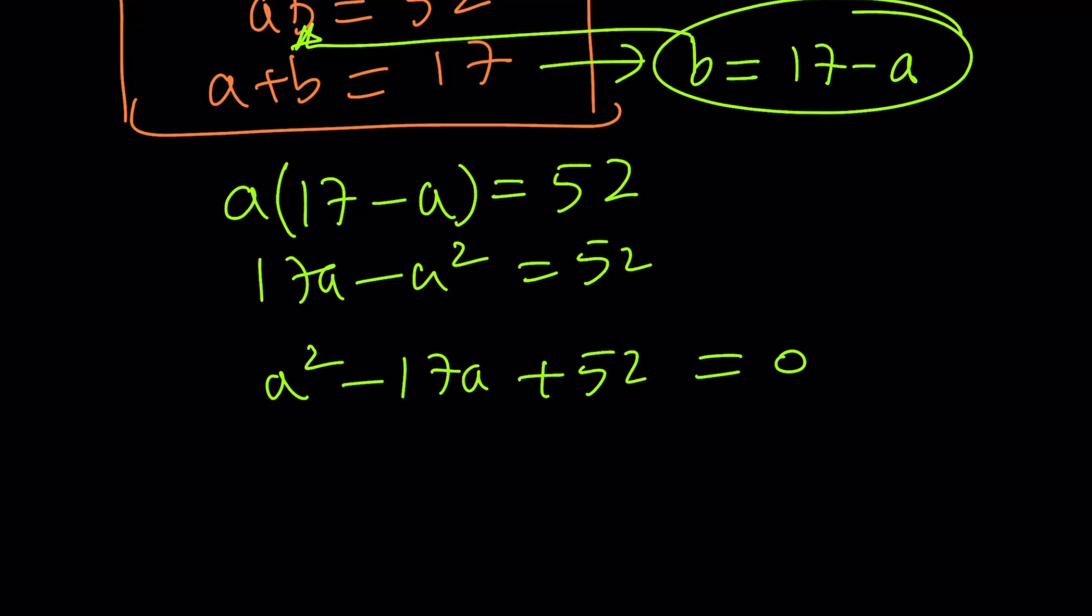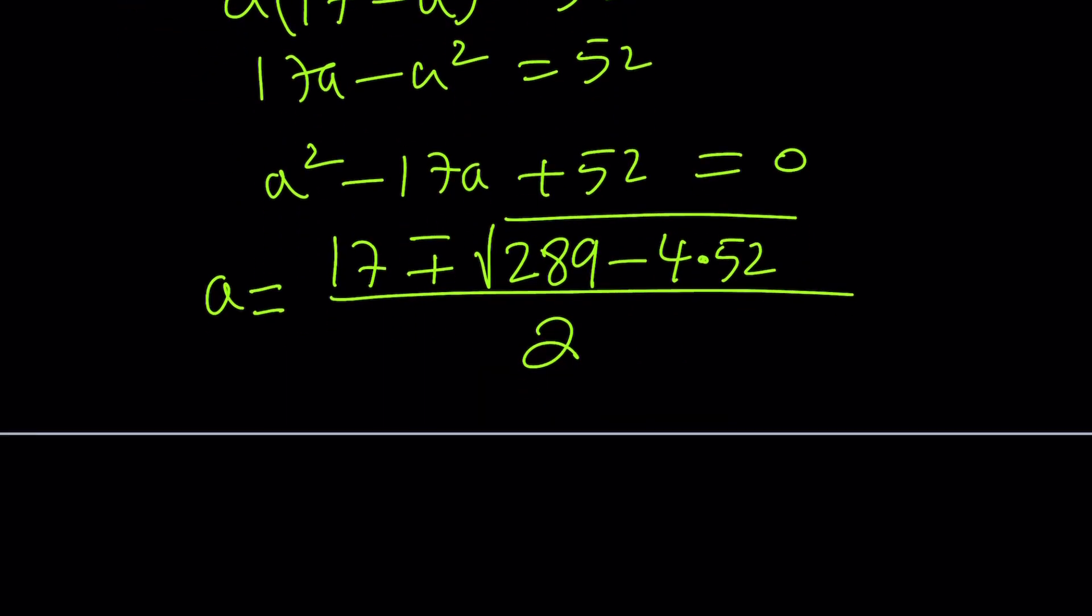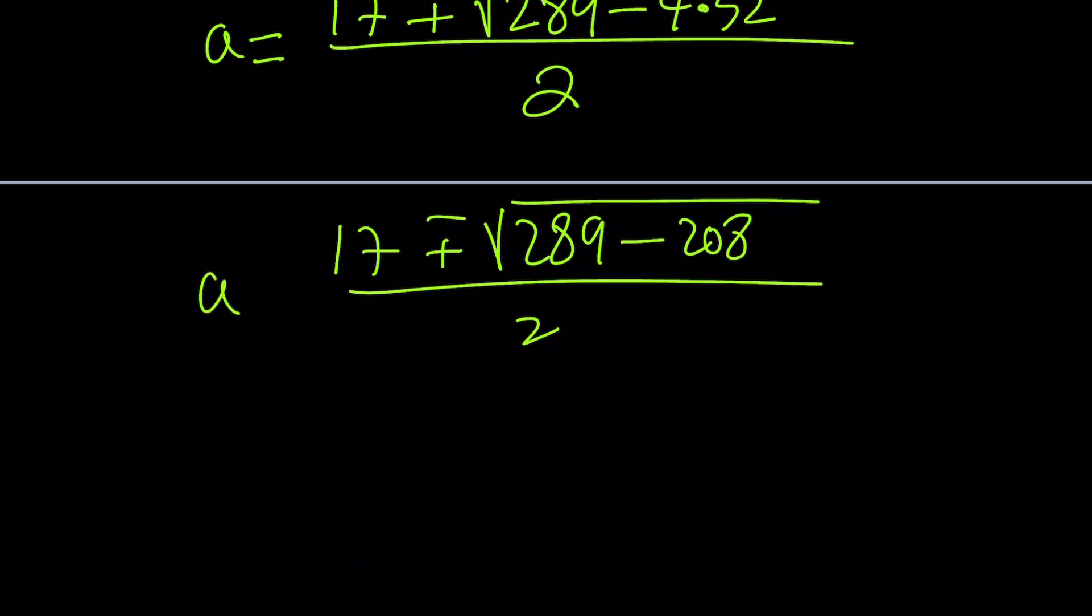You could also use the quadratic formula. So to use the quadratic formula, a equals negative b plus minus the square root of b squared minus 4ac, which is 4 times 52. And then divide it by 2. 4 times 52 is 208. So you're going to go ahead and subtract 289 minus 208, which is going to give you 81, by the way. That's a perfect square.